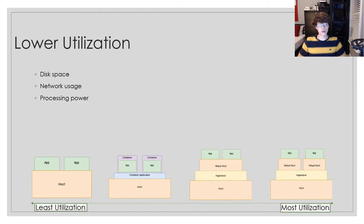Network usage is the harder concept to wrap your head around. Network usage is going to be the heaviest if you have multiple bare metal servers with a single application on each that need to communicate, because data has to go through physical wires, which is pretty costly. With a virtual machine or container application, you're able to do a lot of the network usage just container-to-container or virtual host-to-virtual host, without actually sending data across copper or fiber wire. Containers have their own Docker network, and virtual hosts on hypervisors have their own separate network.